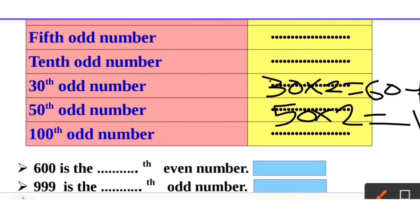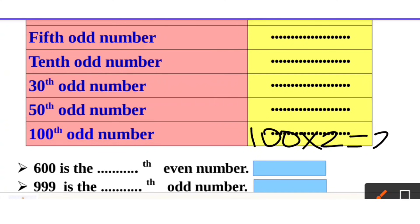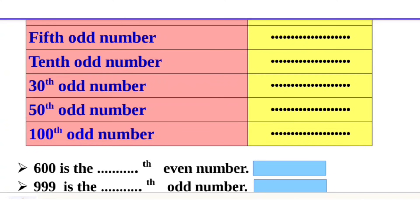The 15th odd number is 15 into 2, which is 30, minus 1 equals 29. The 100th odd number is 100 into 2, which is 200, minus 1 equals 199.